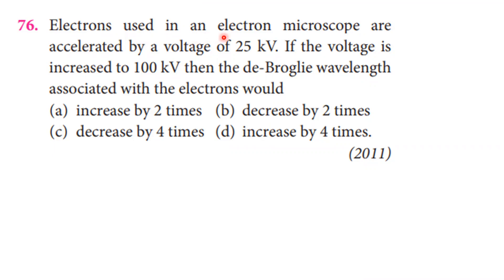Electrons used in an electron microscope are accelerated by a voltage of 25 kilovolt. If the voltage is increased to 100 kilovolt, what happens to the de Broglie wavelength associated with the electrons?